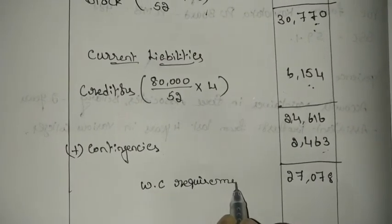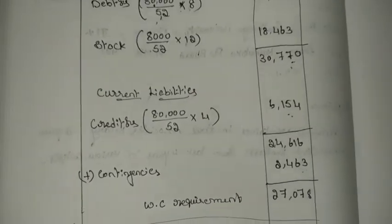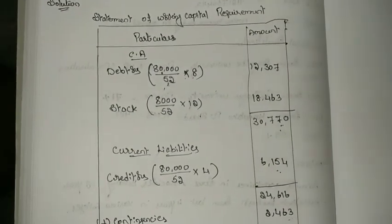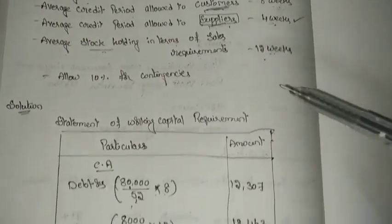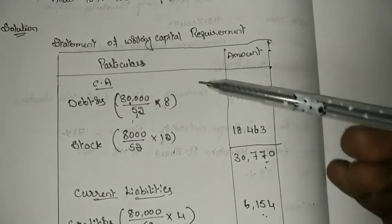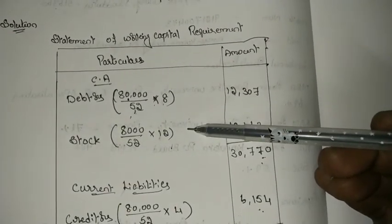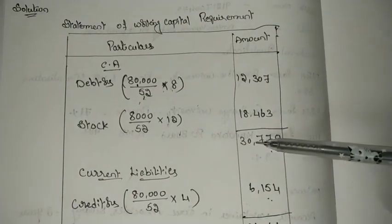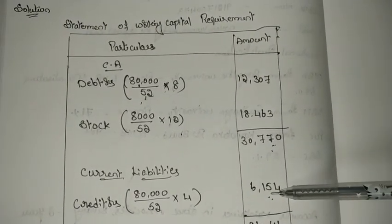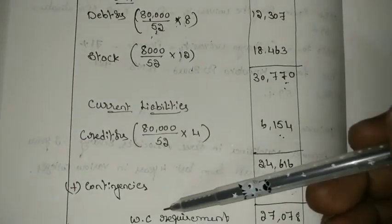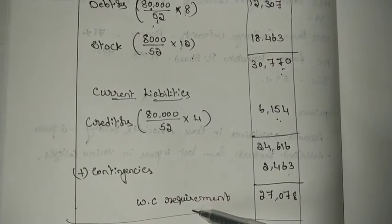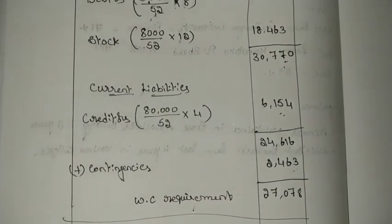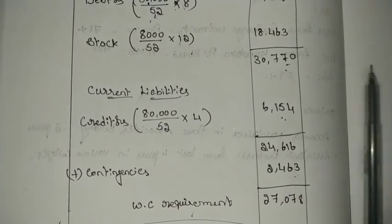So this is how we calculate the working capital requirement. To summarize: read the given information carefully, record all current assets, record all current liabilities, deduct current liabilities from current assets to get net working capital, then add any contingencies. Finally you will get the total working capital requirement. This is how we prepare a statement of working capital.